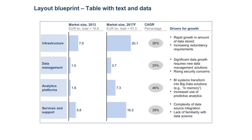Just one more example: this is a page summarizing certain data points on different elements — in this case infrastructure, data management, analytics platforms, and services and support. These could be value-chain steps or industries you want to look at. Again you have data points like a CAGR (compound annual growth rate) and a qualitative assessment of drivers. This is a very typical collection of information in top management style presentations, and once again it is presented in a table format.